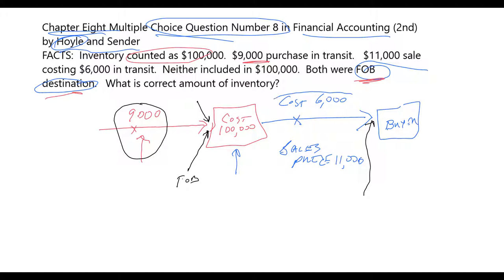And because it's still considered our inventory, this $6,000 should be included with the $100,000.